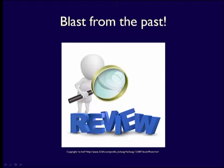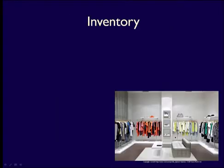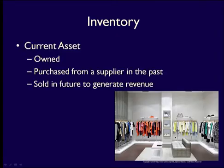Let's first remind ourselves about inventory. Inventory is a finished good that merchandisers buy today so they can generate revenue by reselling it to their customers tomorrow. Inventory is most often a current asset because it's sold in the upcoming year or operating cycle, whichever is longer, but that really depends on the industry the merchandiser happens to be in.